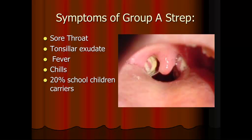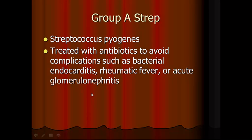Symptoms of strep A are sore throat and tonsillar exudate, as you can see here, fevers, and chills. About 20% of school children are carriers but do not have any symptoms. Group A strep is Streptococcus pyogenes, meaning the bacteria is a circular bacteria in chains. It is treated with antibiotics to avoid complications such as bacterial endocarditis, rheumatic fever, and acute glomerulonephritis. The most common antibiotics are in the amoxicillin group, and often times it will be treated with amoxil.